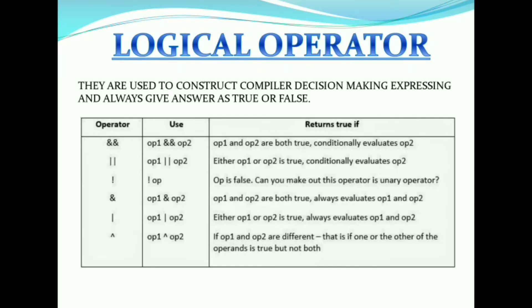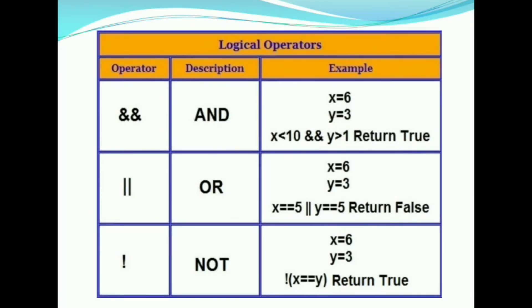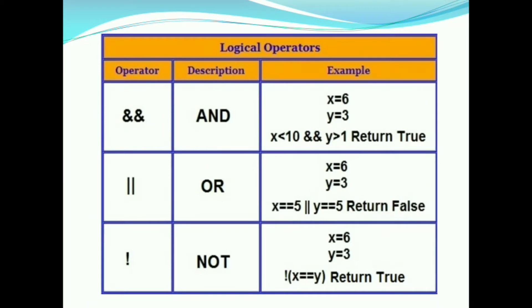Next is logical operator, which is used for decisions and always gives true or false. The AND operator takes two conditions: if both are true, the result is true. For example, x equals 6, y equals 3. x (which is 6) is smaller than 10, AND y (which is 3) is greater than 1. Since both conditions are true, the result is true.